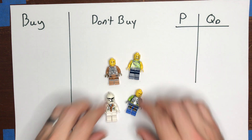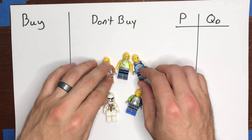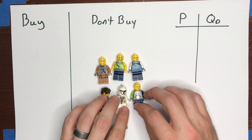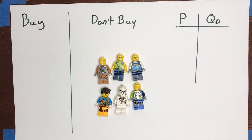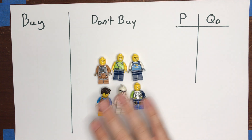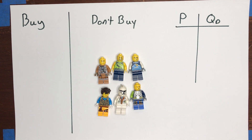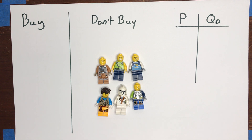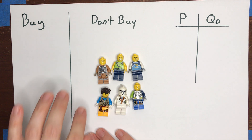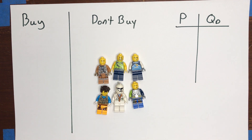Let's begin with a simple example of deriving demand for a very small market. I'm going to have six people in this market. If we were in class, I would be doing this with you folks raising your hand as I call out different prices, asking whether or not you would be willing to purchase something. For the purposes of this video lecture, I'm just going to imagine we've got six people instead of the 30 or 40 in a typical class.